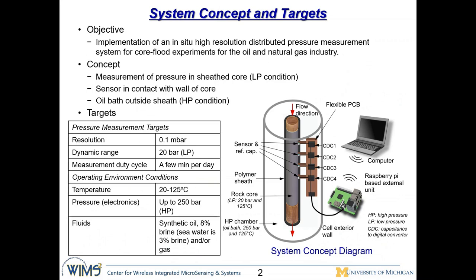This slide shows our concept and the target of our system. As shown in this figure, the cylindrical rock core is wrapped on the side walls with a polymer sheet, shown in black, and the flow is forced through its two ends. The flow can be synthetic oil or brine with a salinity of 8% — for comparison, sea water is 3% — or you can also use gas flow. Within the polymer sheets, we have a low-pressure chamber, called the LP chamber, with pressure up to 20 bar. Outside the polymer sheets, oil bars are used to apply high temperature and pressure — up to 125 degrees Celsius and 250 bar, or 25 megapascal — to put the rock core under downhole environment conditions.